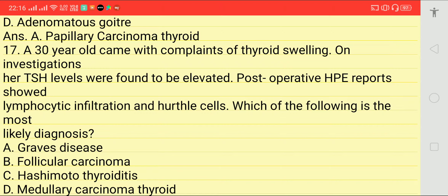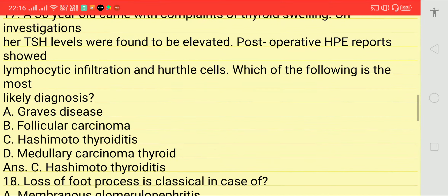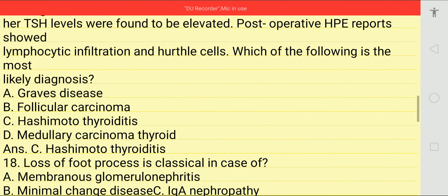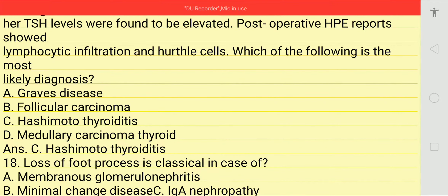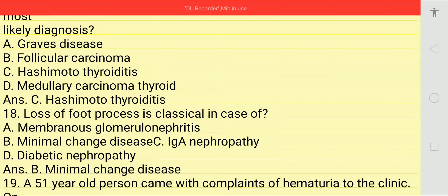Next question: a 30-year-old woman comes with complaint of thyroid swelling. On investigation, TSH level was found to be elevated. Post-operative biopsy report showed lymphocytic infiltration and Hürthle cells. Which of the following is the most likely diagnosis? Answer is Hashimoto's thyroiditis.